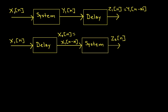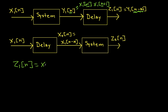If I have some arbitrary x1 of n going through my system, then y1 of n is going to be x1 of n times x1 of n plus 1. To find z1 of n, I get z1 of n by taking y1 and replacing its argument n by n minus capital N. So z1 of n equals x1 of n minus capital N, times x1 of n minus capital N plus 1.